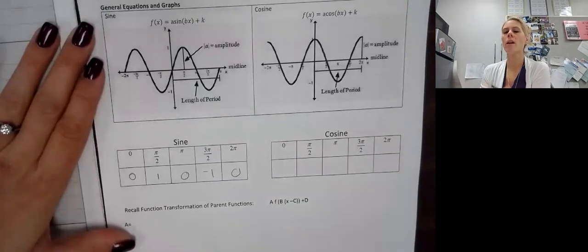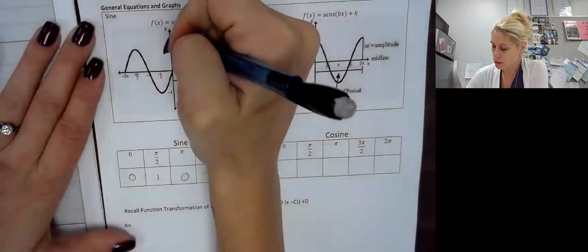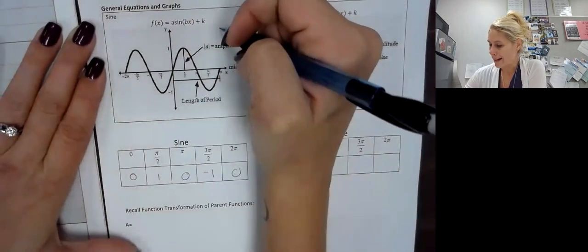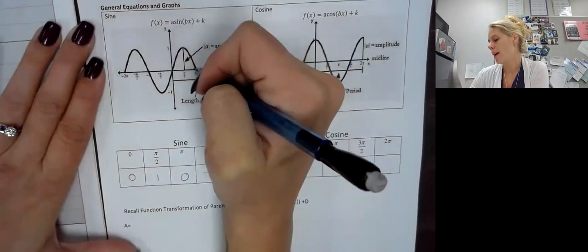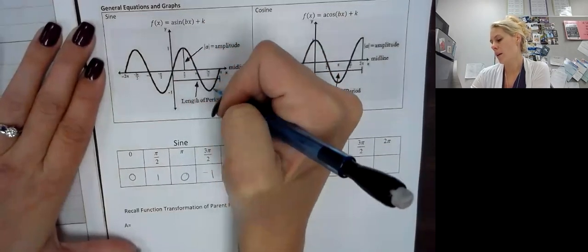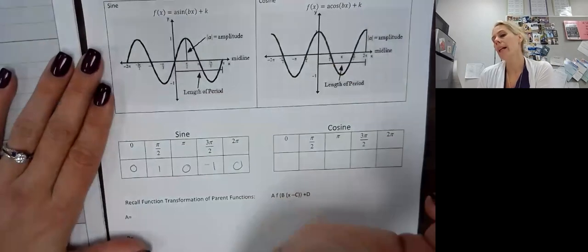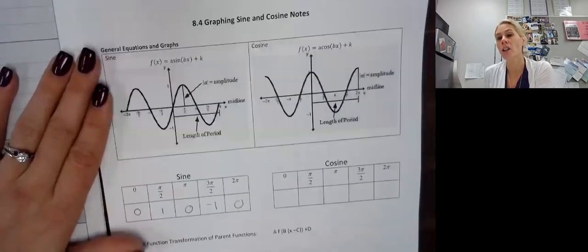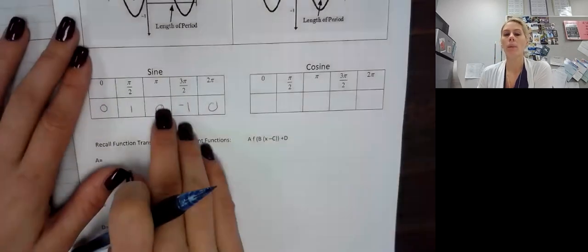So if you look at zero — our y-axis — to 2 pi right here, we see we have an up wave and a down wave, and then it would keep repeating. This is going to help us with our transformations of that parent function, because this is what we always start with when we talk about sine.